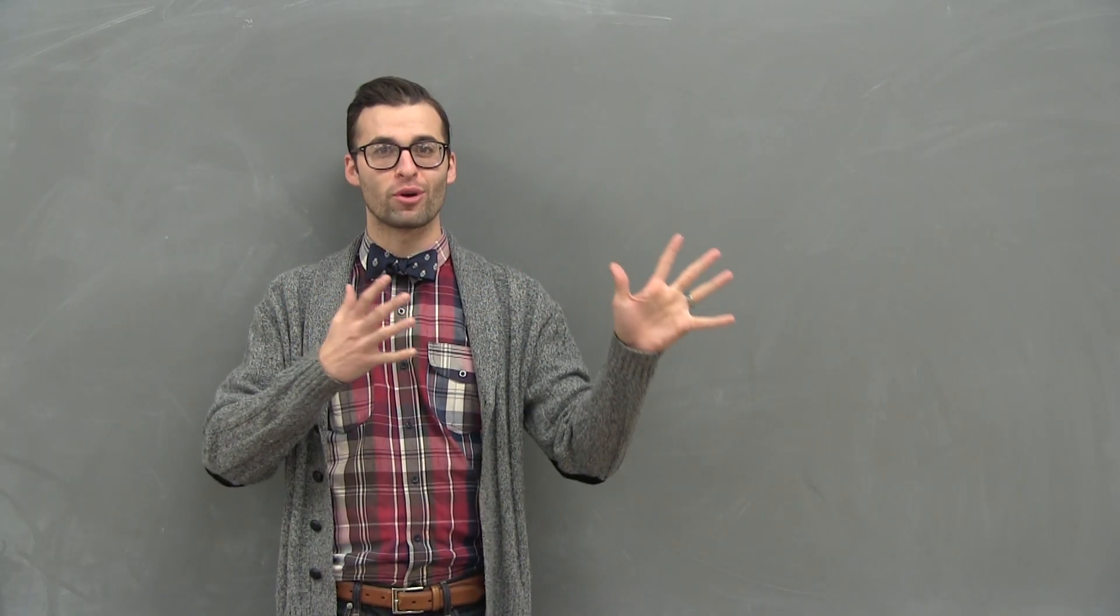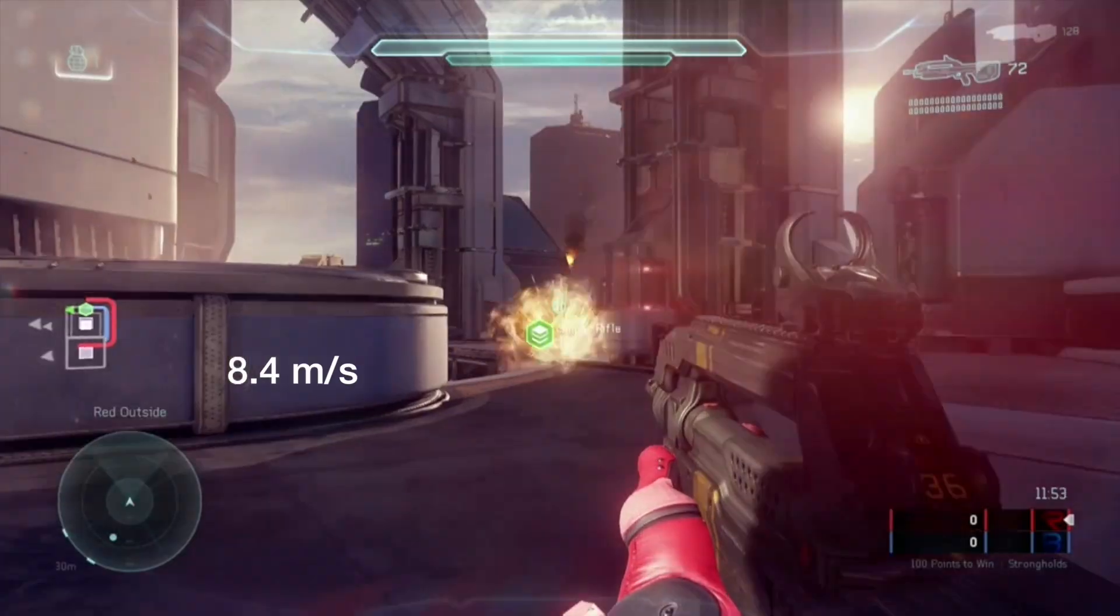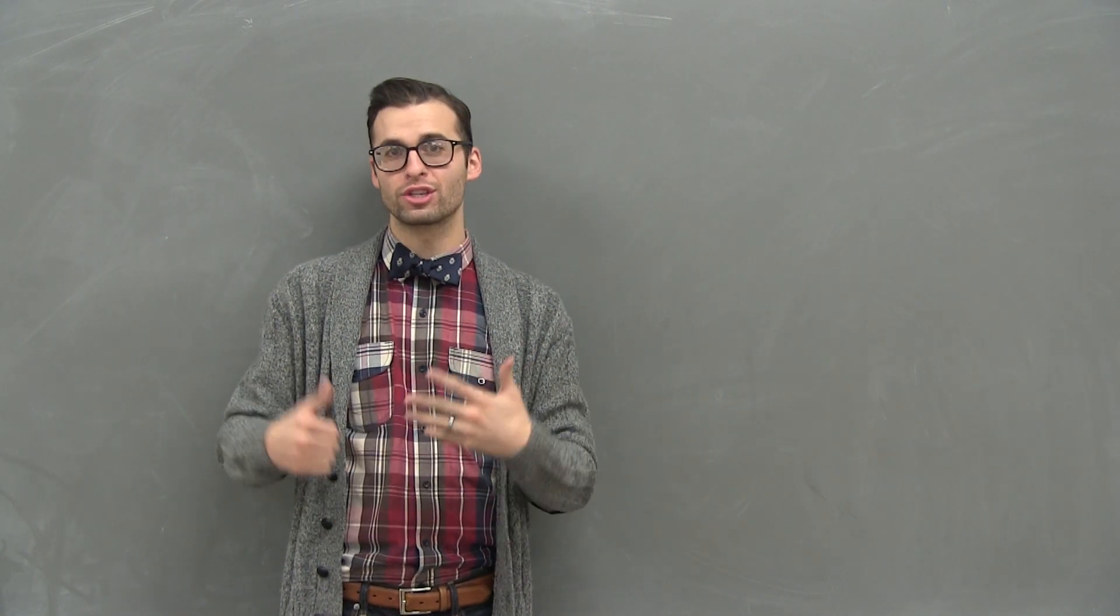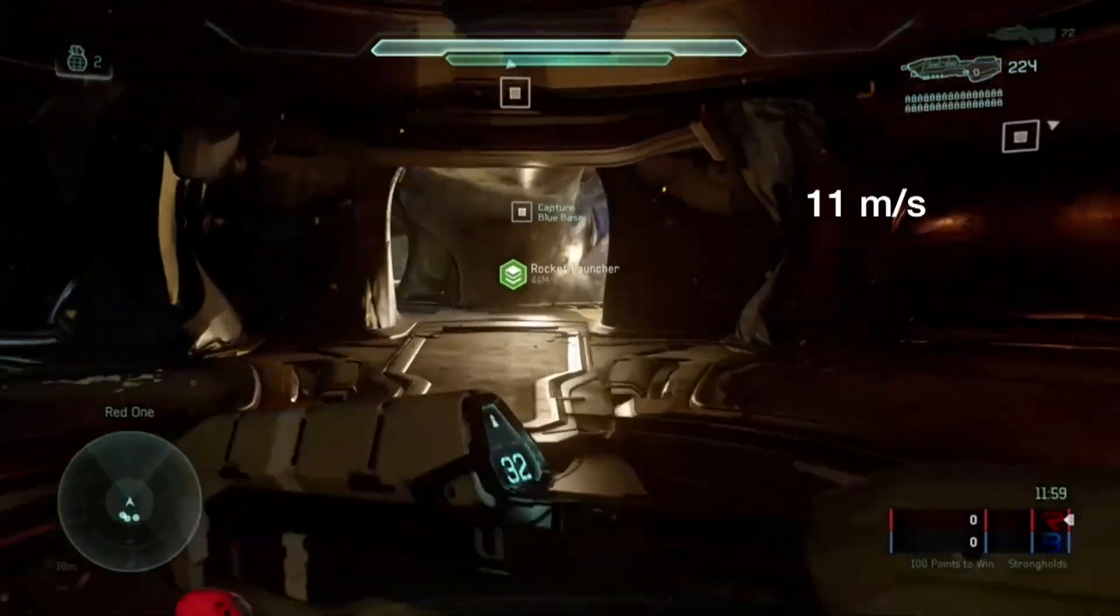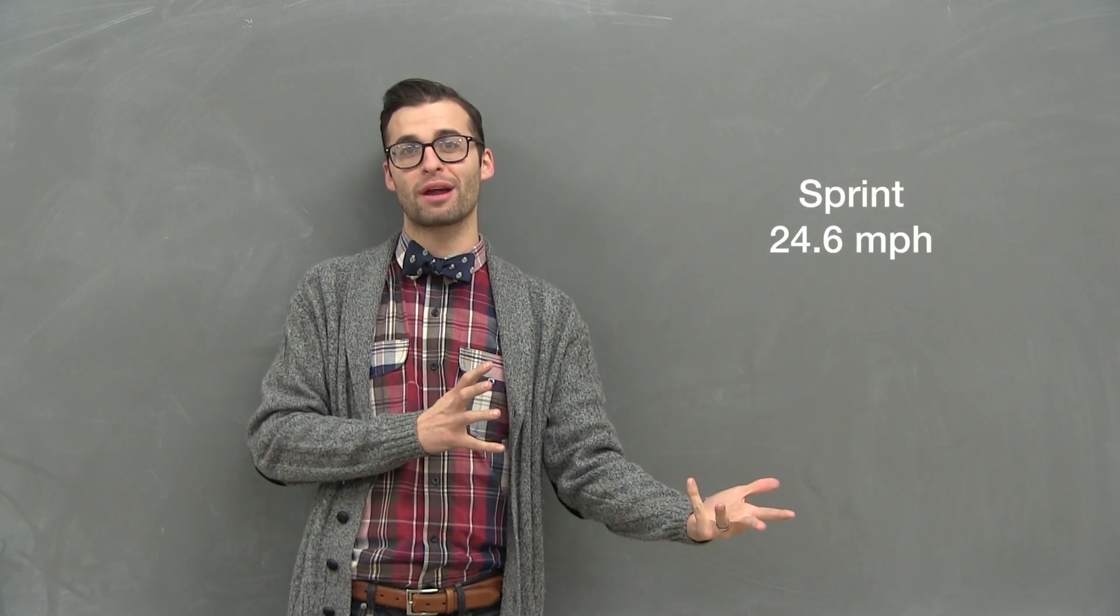When the Spartan 4 is just jogging, you are going about 8.4 meters per second, which is about 18.8 miles per hour. Once you hit the sprint, you are going 11 meters per second, which is about 24.6 miles per hour.